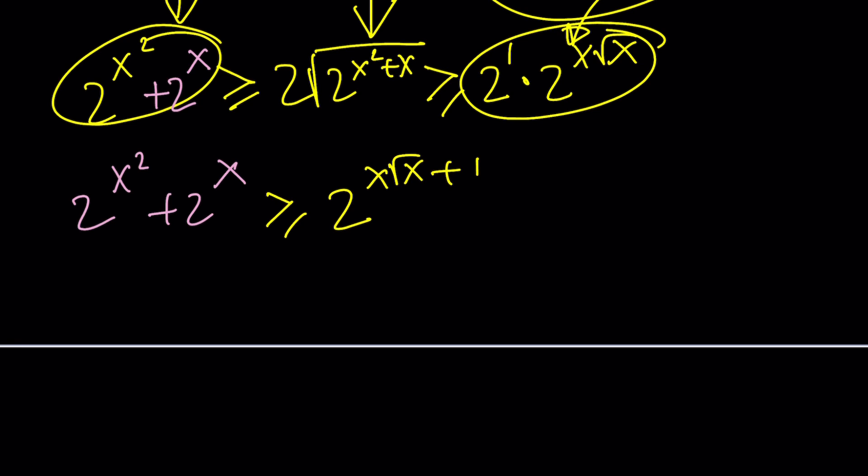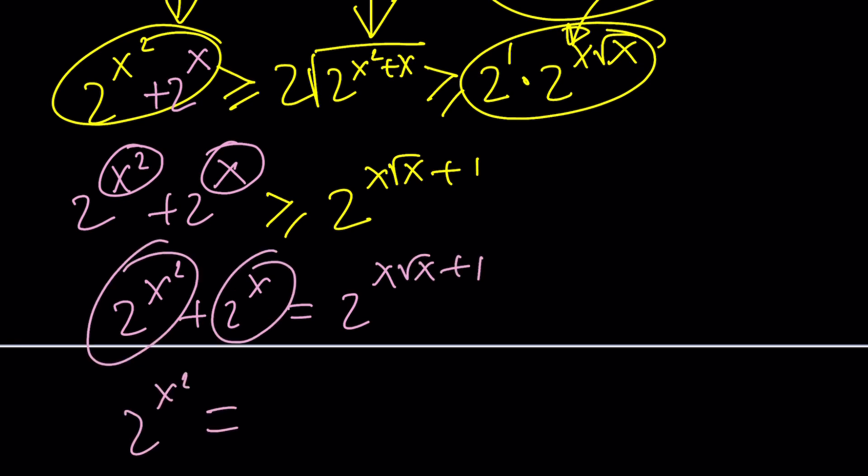This is exactly the same equation that we had. But what does that mean? All of this means that initially these two quantities were equal in order for this to happen. Because you can only have an equality if these two quantities are equal. And when these two quantities are equal, that means X squared equals X. And that means X is 0 or X is 1.